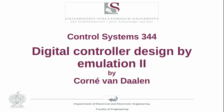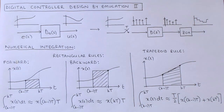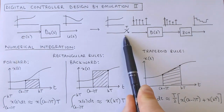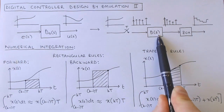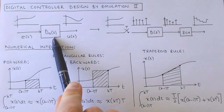In this video, we look at a number of discretization methods based on numerical integration. The discretization task is finding a discrete controller such that the combination of the sampler, the controller, and zero order hold circuit behave similarly to the designed continuous controller.